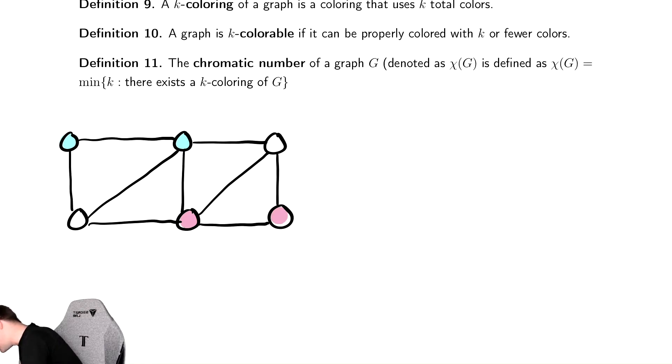So here I colored the vertices in some order and this is not what we call a proper coloring because there are two vertices that are the same color. There's these two blue vertices, for example, that are connected by an edge. A proper coloring means that can't be the case.